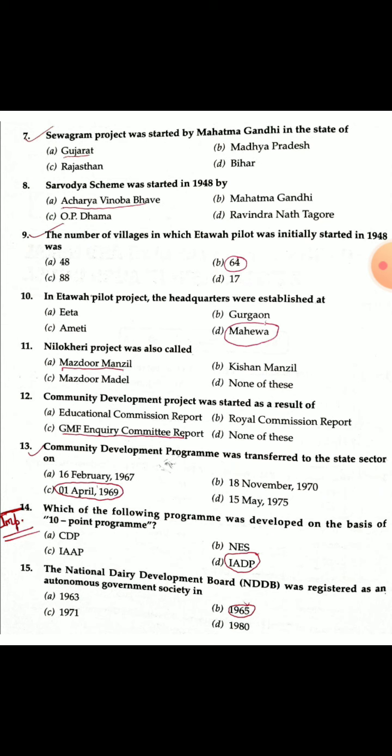Question 14: Which of the following programs was developed on the basis of a 10-point program? It was the Intensive Agriculture District Program (IADP), which was started on a 10-point basis. IADP is also called the Package Program; it was started in 1960.